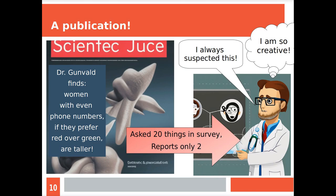Gunvald is very happy because he has this publication. He finds that women with even phone numbers, and only women with even phone numbers, if they prefer red over green, they are taller. Brilliant finding. He writes in his paper that they always suspected this. They make some kind of evolutionary story from it. He feels so creative when doing this, looking for the low p-values and making up the story. It's storytelling. He asked the women twenty things in the survey but only reported two: the phone number and the preference for color.